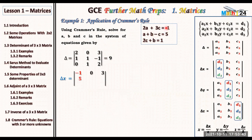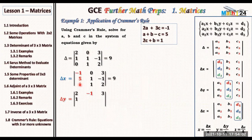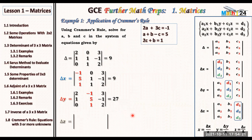Now let us look for delta x. We replace the first column by the right-hand side constants: −1, 5, 1 — as you can see we have replaced it, written in red. Copy out the same matrix but replace the first column. Delta x is also equal to 9 when we get the determinant. For delta y, we replace the second column by −1, 5, 1. This determinant gives us a value of 27.